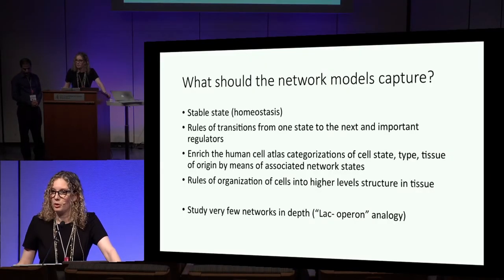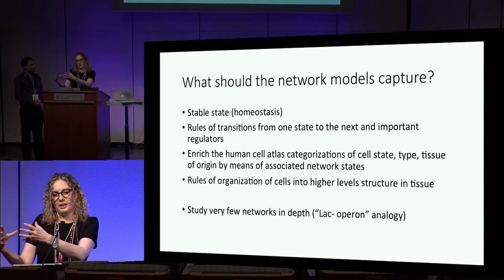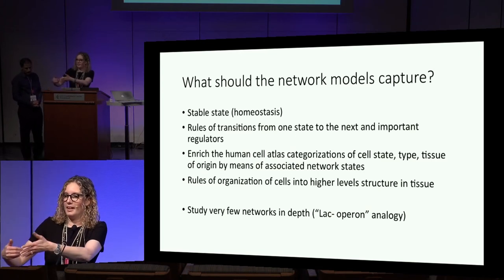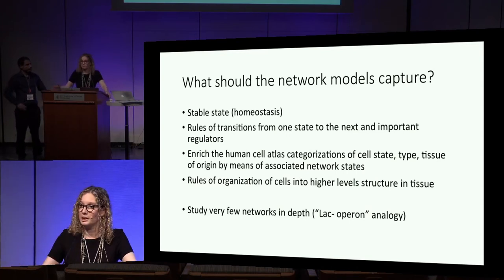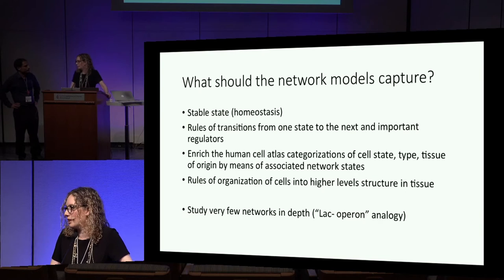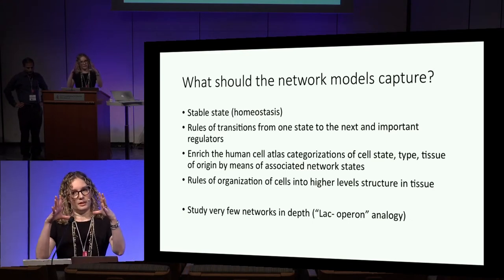We also discussed what kind of data we think we're still missing, or what data we'd like to focus on, to support the long-term vision of creating mechanistic models in the form of networks. What do we need to make sure we collect a priori? It's almost like any experiment: you have the question in mind and then gather the data, rather than having data and then thinking about the questions. Knowing what we're after early on is really important. We also discussed the importance of perturbation data, which will help us connect these networks to phenotypes.